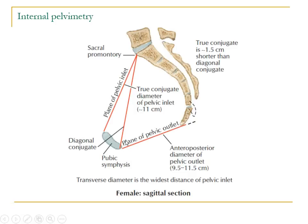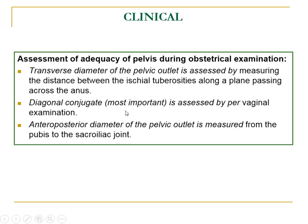The diagonal conjugate is about 13 cm, and when we subtract about 1.5 cm from this diagonal conjugate we get the true conjugate, which is required for the measurement of the pelvic inlet. This diagonal conjugate can be measured by pervaginal examination. When we subtract about 1.5 cm from the diagonal conjugate we can get the anteroposterior diameter of the pelvic inlet. The anteroposterior diameter of the pelvic outlet is measured from the pubic symphysis to the sacroiliac joint, whereas the transverse diameter of the pelvic outlet is measured by the distance between the ischial tuberosities along a plane passing across the anus.